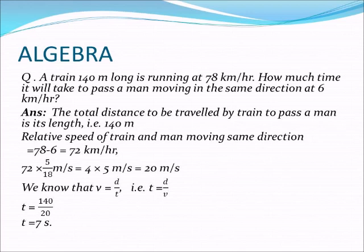So now distance is 140 meter and relative speed is 20 meter per second, meaning in one second the train moves 20 meter. We use the formula: velocity is equal to distance by time. That is, speed of any object is distance divided by time. From that equation, we can derive that time is equal to distance divided by velocity or speed.